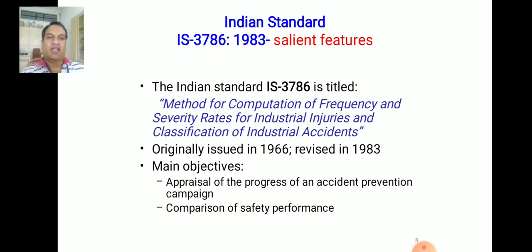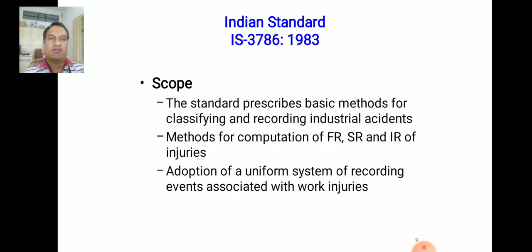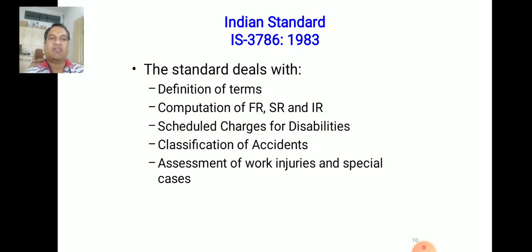IS 3786 was originally issued in 1966, revised in 1983, and we currently use the 1983 version. The main objective of IS 3786 is the appraisal of the progress of an accident prevention campaign and comparison of safety performance. The standard prescribes basic methods for classifying and recording industrial accidents, methods for computation of FR (Frequency Rate), SR (Severity Rate), and IR (Incident Rate) of injuries, and adoption of a uniform system for recording events associated with work injuries.